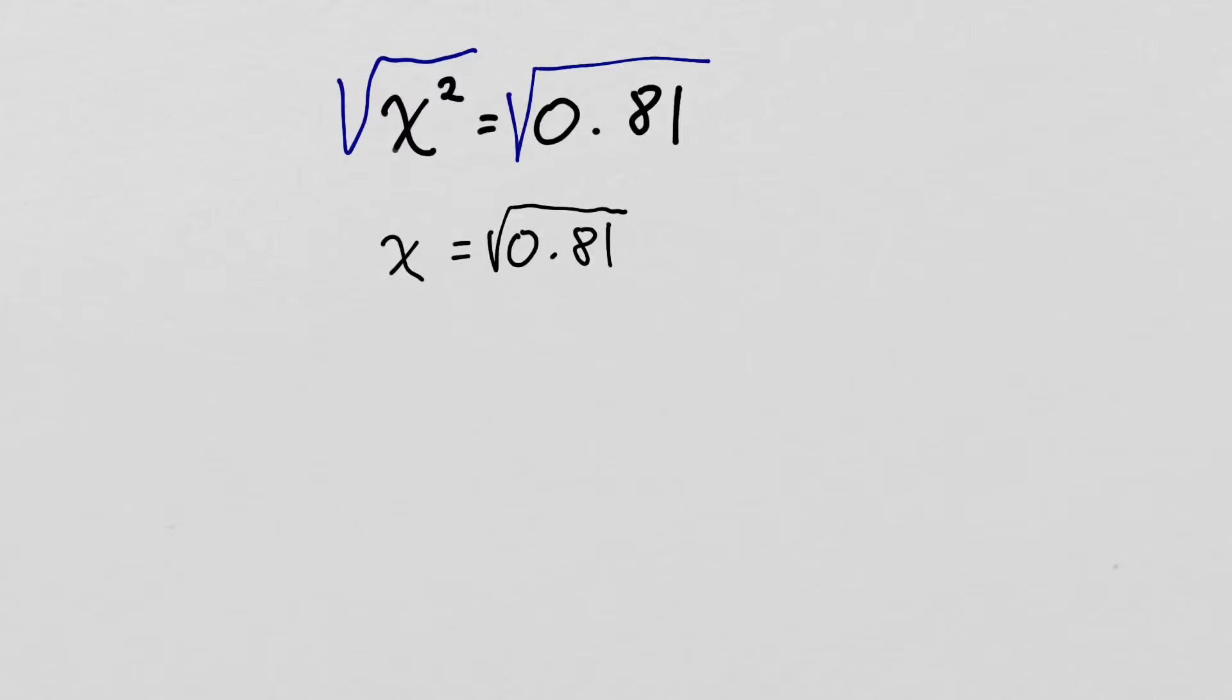Chances are they've given you a perfect square, they've just given it to you in decimal form. Now, 81. We know a number that's 81. 9 times 9 is 81.